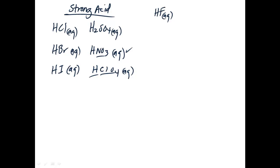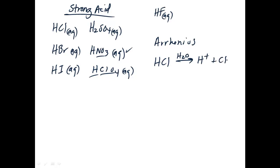So what makes an acid strong? We need to define what an acid is. There are actually three theories. Svante Arrhenius was the first — he was the person who determined that sodium chloride is actually sodium ions and chloride ions. His definition: if you take a substance like HCl, add it to water, and get hydrogen ions and chloride ions, that's an acid. Anything that generates the hydrogen ion in solution is an Arrhenius acid.